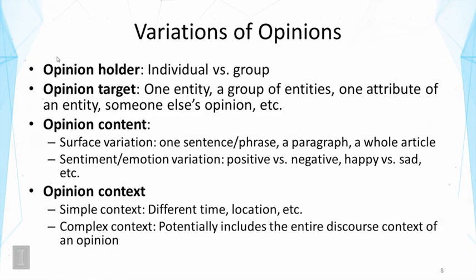There are also some interesting variations of opinions to examine more systematically. First, the opinion holder could be an individual or a group of people — sometimes an opinion is from a committee or from a whole country. Opinion target can also vary a lot. It can be about one entity, a particular person, product, or policy. But it could also be about a group of products, products from a company in general, or very specifically about one attribute of an entity — for example, just the battery of an iPhone. It could even be about someone else's opinion. There's a lot of variation that will cause the problem to vary significantly.